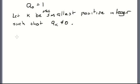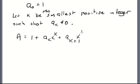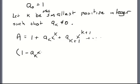We're going to let A be the generating function for the sequence a_n, and that's equal to one plus a_k times x to the k, plus a_{k+1} times x to the k+1, plus dot dot dot. Now I want to multiply. What I'm going to try to do is construct a multiplicative inverse of A, so I'm going to start by multiplying A by one minus a_k times x to the k.